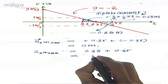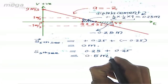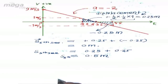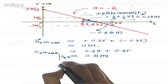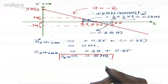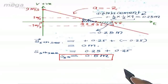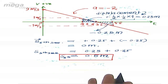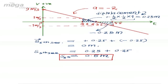The distance travelled by the particle during the 5th second is the magnitude of displacement in each sub-interval: 0.25 metres from 4 to 4.5 seconds, and 0.25 metres from 4.5 to 5 seconds, giving a total distance of 0.5 metres. Using the velocity-time graph, distance is found by taking the area without sign, while displacement requires the area with sign.